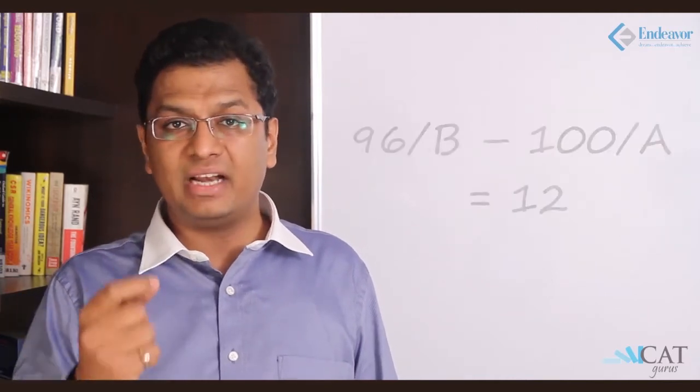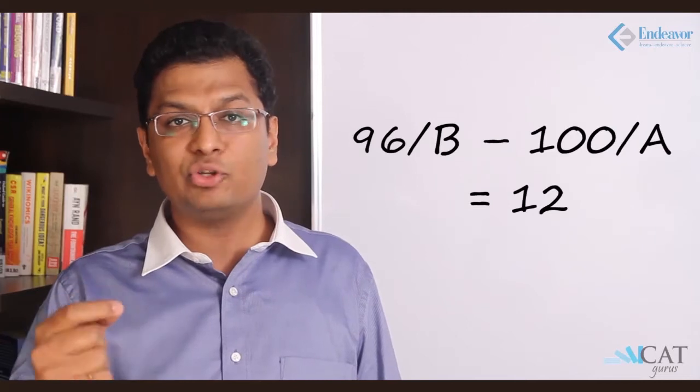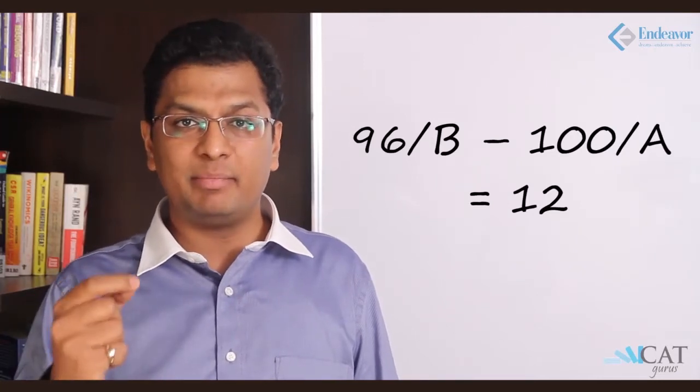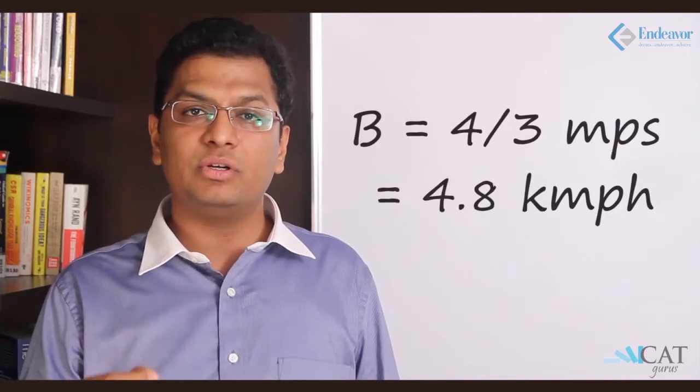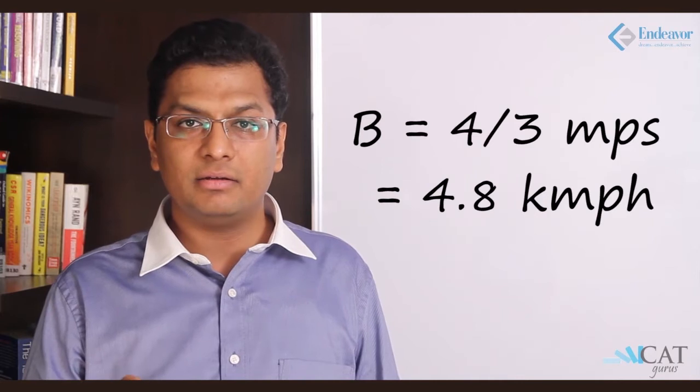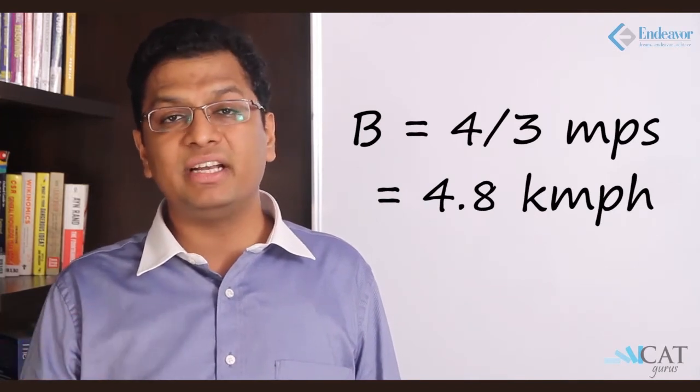So what happens here? B takes more time. So 96 upon speed of B, I don't know the speed of B. So 96 upon B minus 100 upon speed of A. Speed of A is 5 by 3. Now the difference of these two is 12 seconds. Calculating we get B equal to 4 by 3 meters per second. We get the answer is 4.8 kilometers per hour.